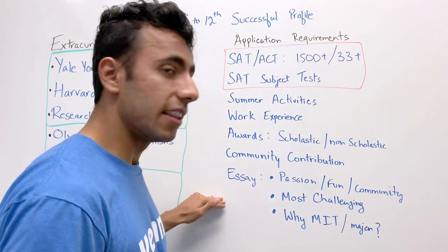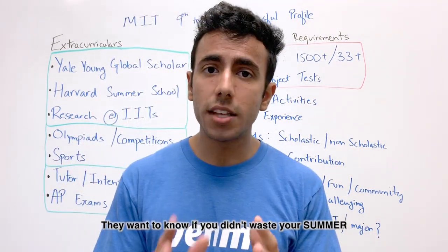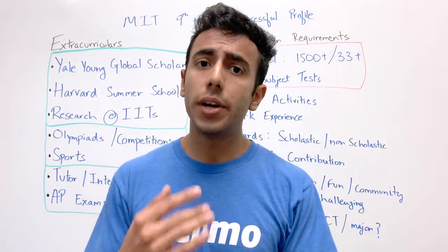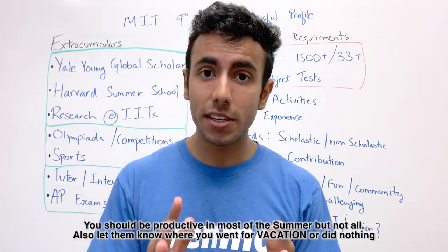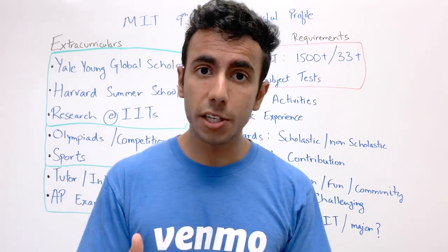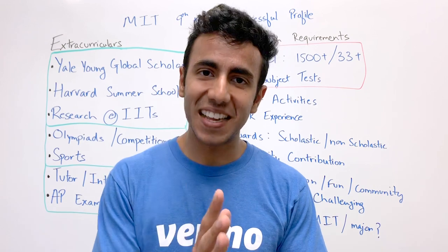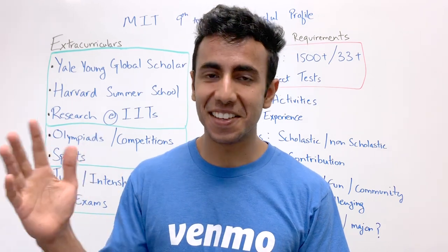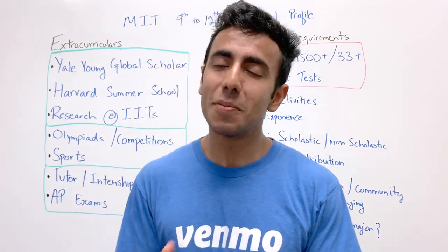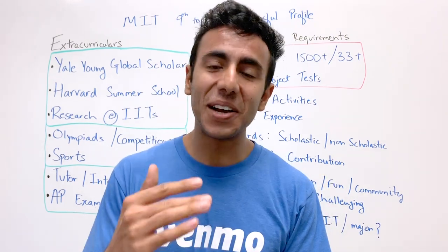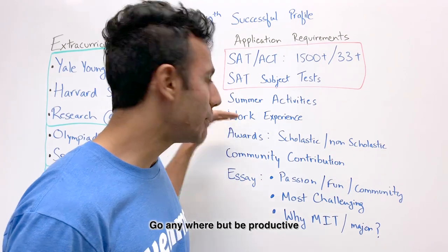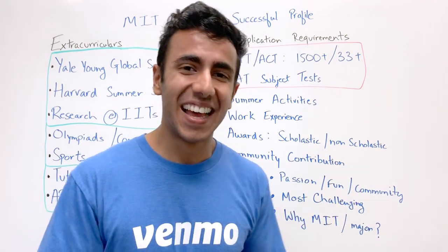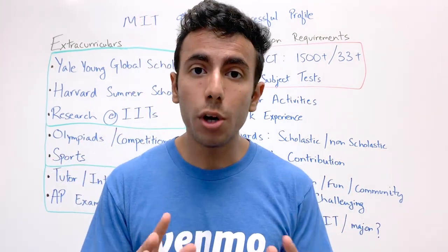After the basic info, you'll fill out the summer activities section. MIT wants to know what you did each summer from 9th to 12th standard. They might even ask where you went on vacation. Personally, I think you should try to go on educational trips — for example, visiting a science city. Even if you didn't do anything particularly significant one summer, still write it down.